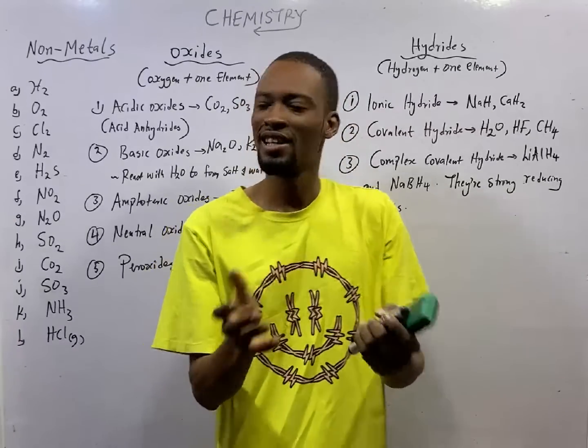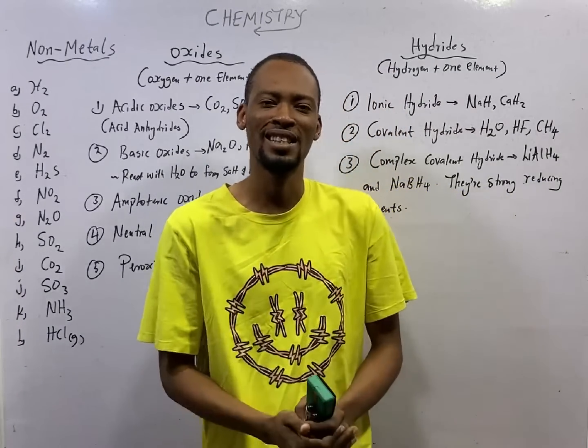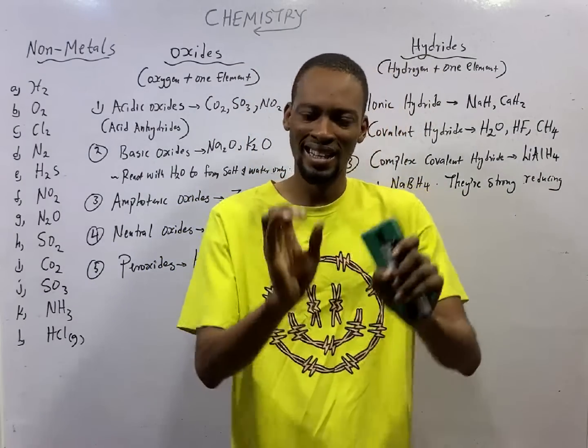This is episode number 59 of the 120 days to JAMB chemistry with Flash Isaac. In this episode, we shall be looking at oxides and hydrides.